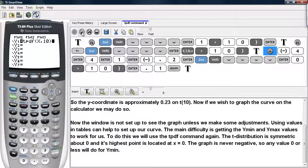So, using values and tables, we can help set up our window. But the main difficulty is getting the y-min and the y-max values to work for us. So, to do this, we're going to use the tPDF command again. We're going to exploit the fact that the t-distribution is symmetric around 0, and its highest point is located at x equals 0. The graph is never negative, so any value 0 or less will work for the y-min.